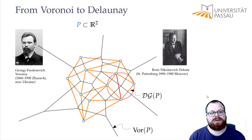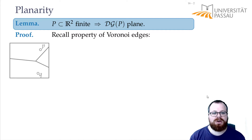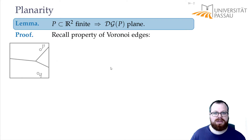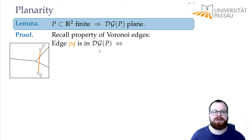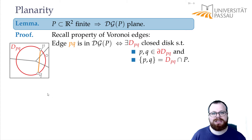Before we can do that, we first have to prove properties of this Delaunay graph. In particular, we first have to prove that it is planar, so that it is crossing-free. We want to recall a property of the Voronoi edges. If we have two cells corresponding to two sites P and Q, then we have an edge between P and Q in the Delaunay graph if and only if there is an edge between those cells in the Voronoi diagram. We have a Voronoi edge if and only if there is some closed disk that contains these two sites on its boundary and no other point on its boundary or in its interior.